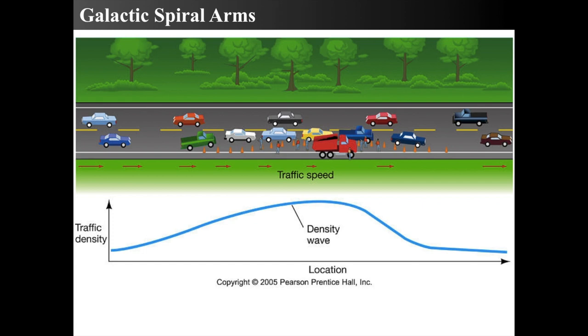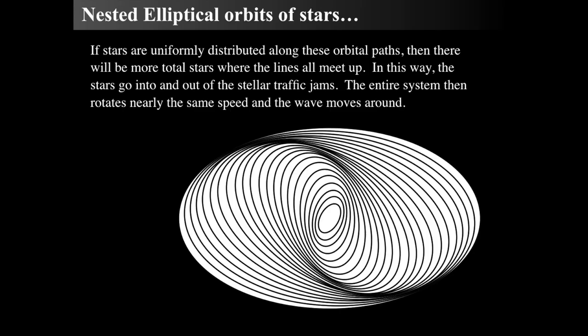Another way to think about it is they're staying all the same speed, they just kind of pass through. These nested elliptical orbits create the stellar traffic jams. Those stellar traffic jams are where the gas clouds are compressed. If you take this entire system and then rotate it, the entire system also rotates as a group. The elliptical orbits aren't fixed, so the entire system rotates, and then you have a rotating spiral galaxy.